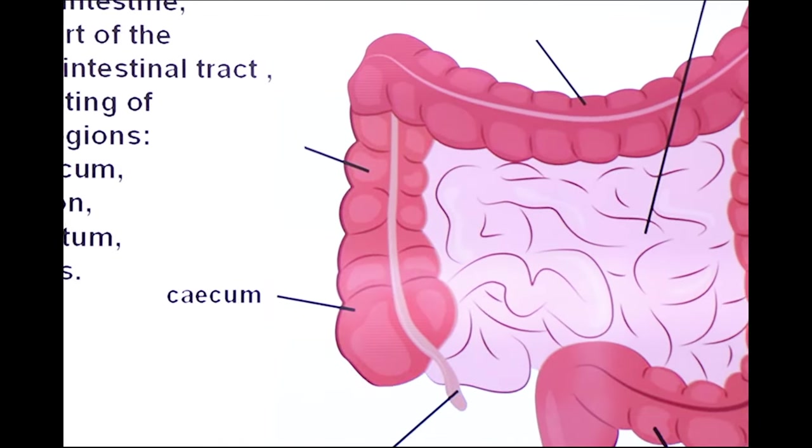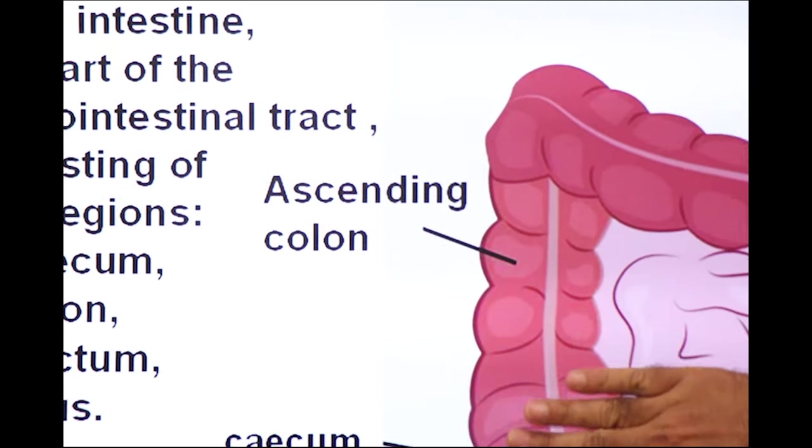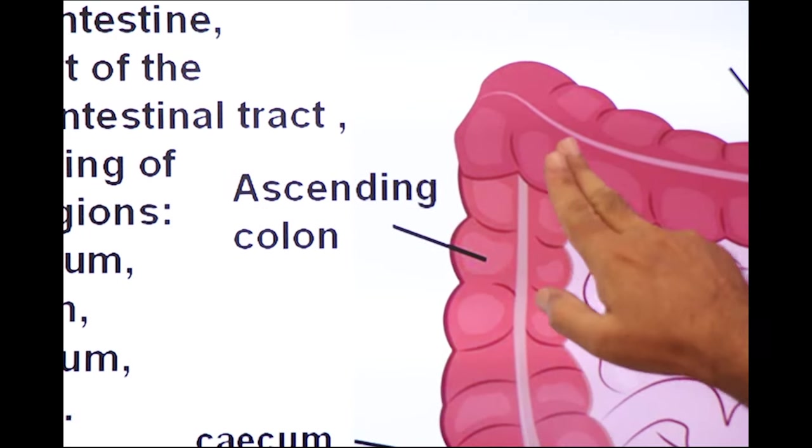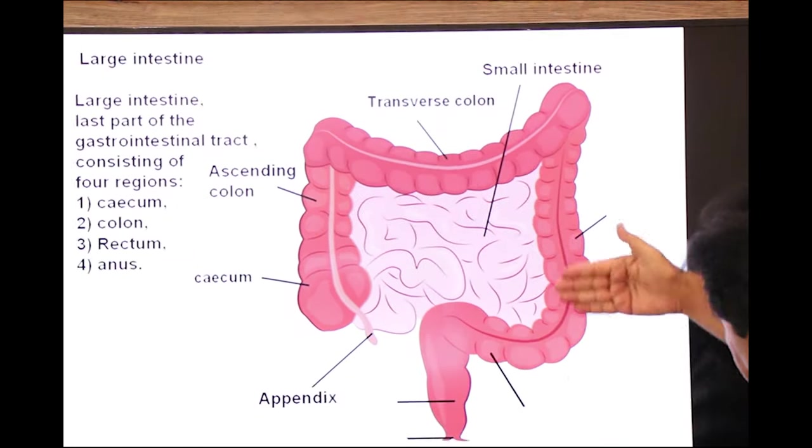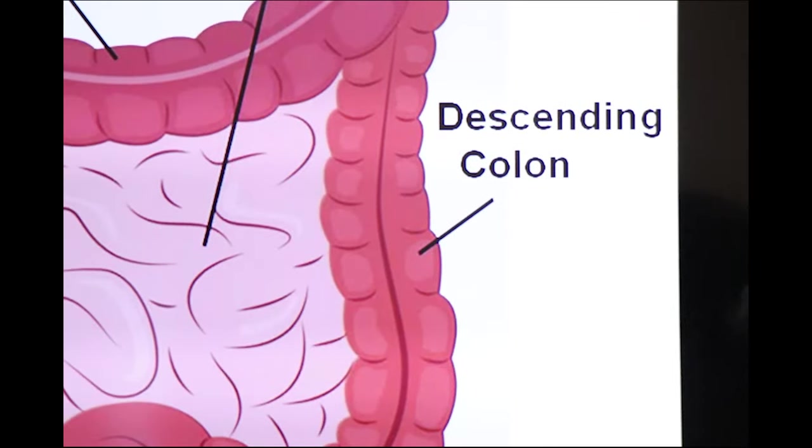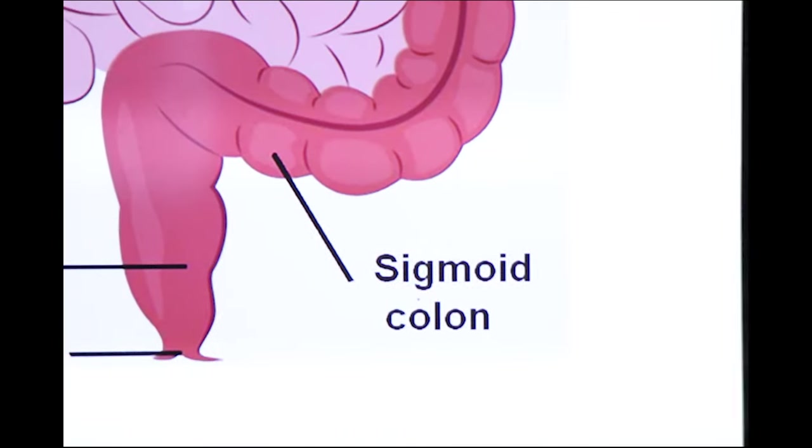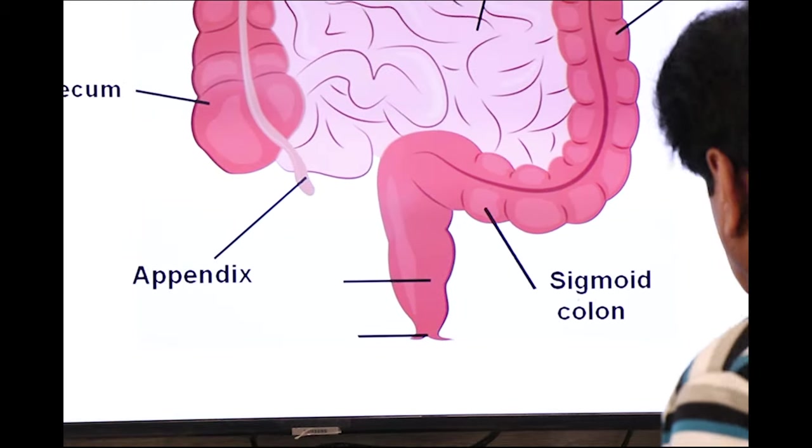Colon itself has different sections: ascending colon, this one transverse colon, this one descending colon, and here the curved part of the colon, s-shaped sigmoid colon. And sigmoid colon is connected with the rectum.